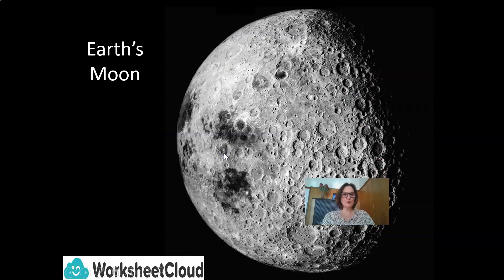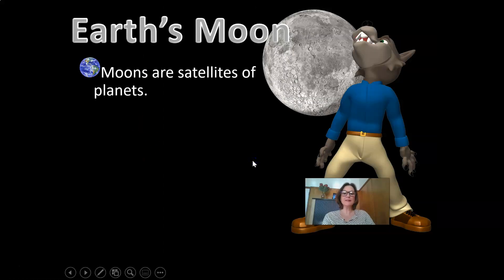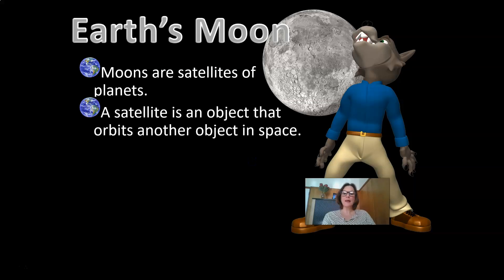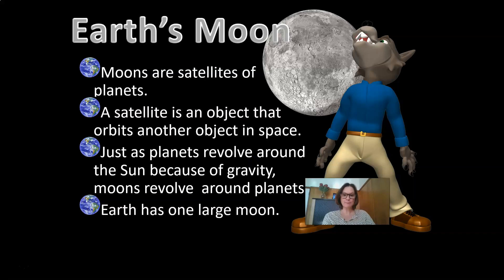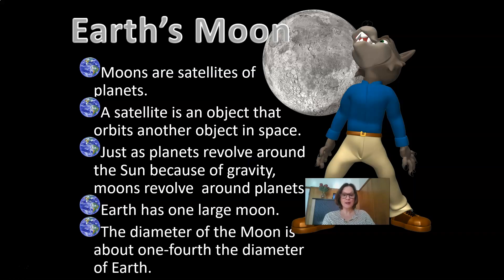Here's Earth's Moon. Moons are satellites of planets — a satellite is an object that orbits another object in space. Just as planets revolve around the Sun because of gravity, moons revolve around planets. Earth has one large moon, and the diameter of the Moon is about one-fourth the diameter of Earth.